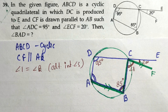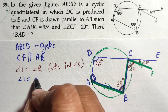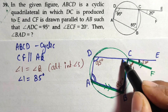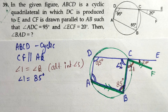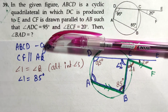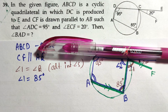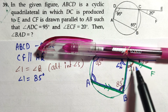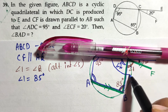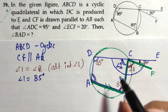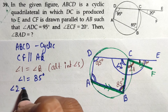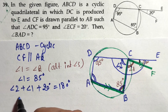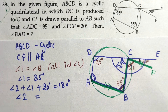Since CF is parallel to AB, we look for the Z-form — alternate interior angles. Angle 1 (at F) and angle B are alternate interior angles, so angle 1 equals 85 degrees. Now at point E on the straight line, angle 2, angle 1, and the 20-degree angle must sum to 180 degrees. So angle 2 plus 85 plus 20 equals 180, giving angle 2 equals 75 degrees.